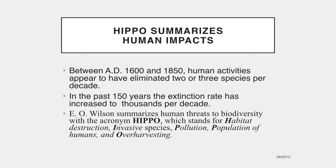E. O. Wilson summarizes human threats to biodiversity with the acronym HIPPO, which stands for Habitat Destruction, Invasive Species, Pollution, Population of Humans, and Overharvesting. Let's look in more detail at each of these issues.